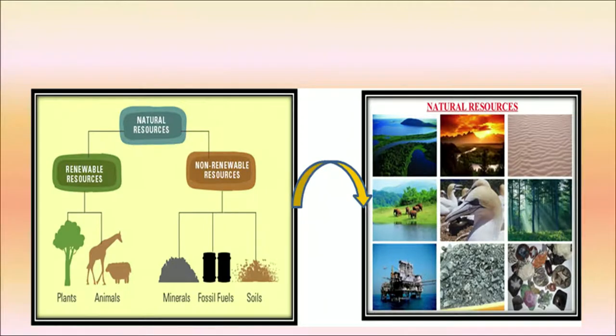Renewable resources are those that are constantly available, like water, or can be reasonably replaced or recovered, like plants and animals. Animals are also renewable as they reproduce offspring to replace adult animals. Non-renewable resources are those that cannot easily be replaced once they are destroyed.